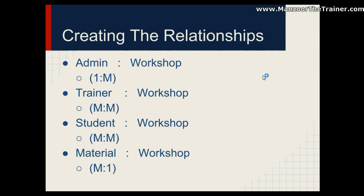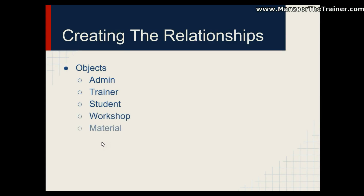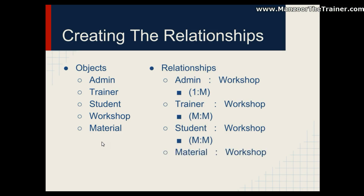Relationships depend on the business requirements. To summarize, the objects are Admin, Trainer, Student, Workshop, and Material. The relationships are: Admin–Workshop: one-to-many; Trainer–Workshop: many-to-many; Student–Workshop: many-to-many; Material–Workshop: many-to-many. These relationships hold regardless of project size, whether for a large organization like Microsoft or a very small project.